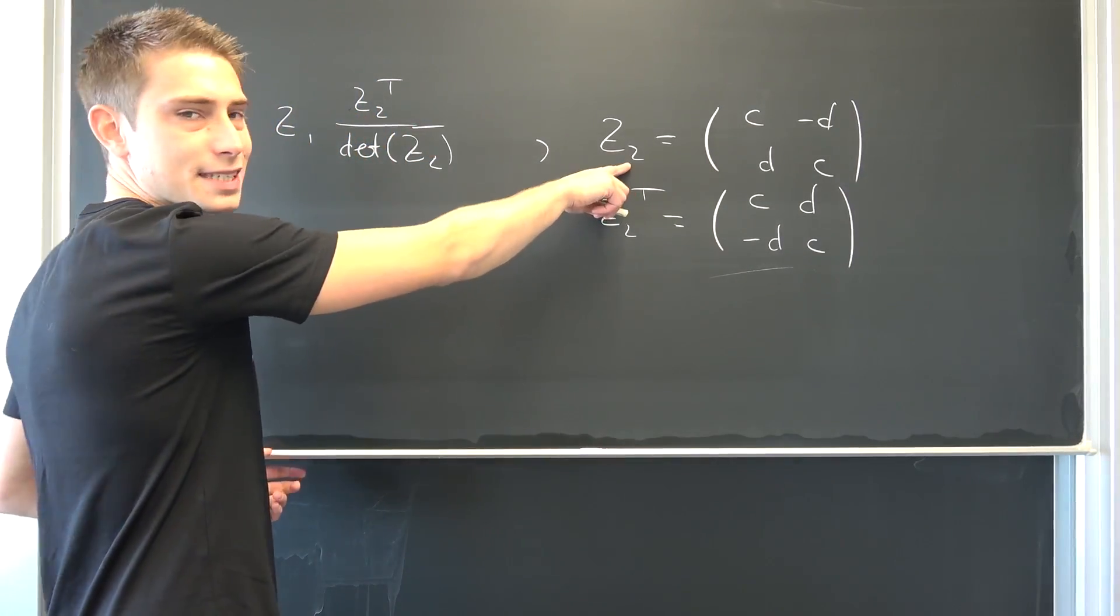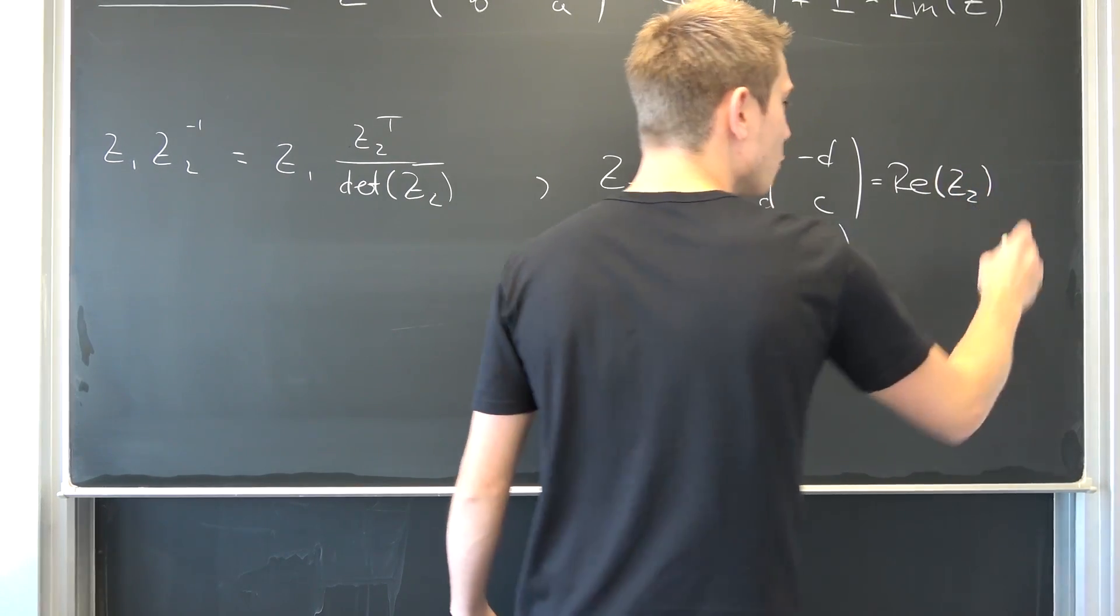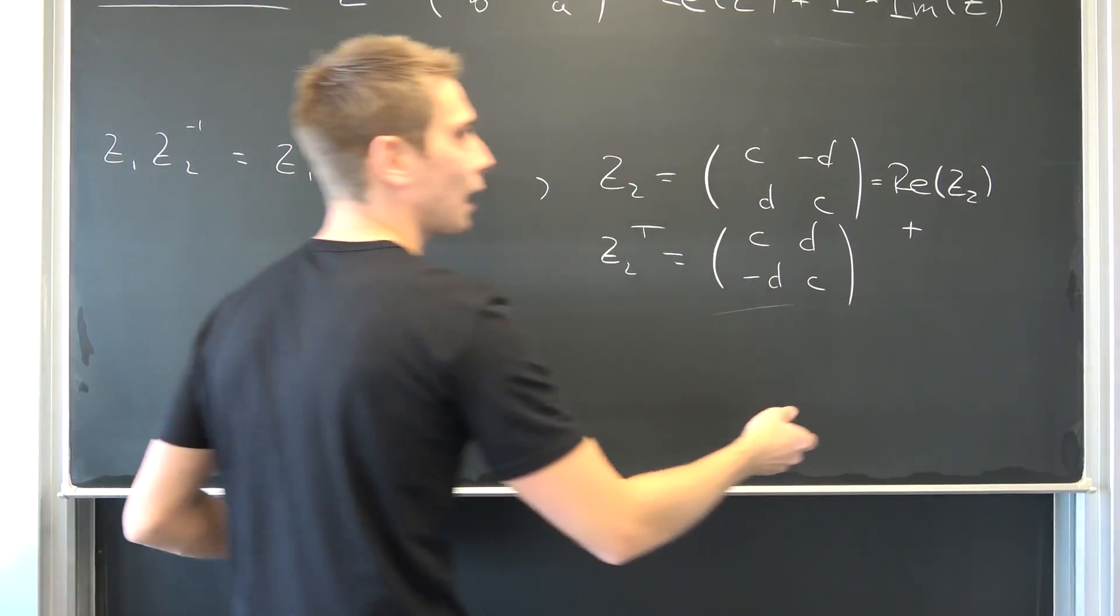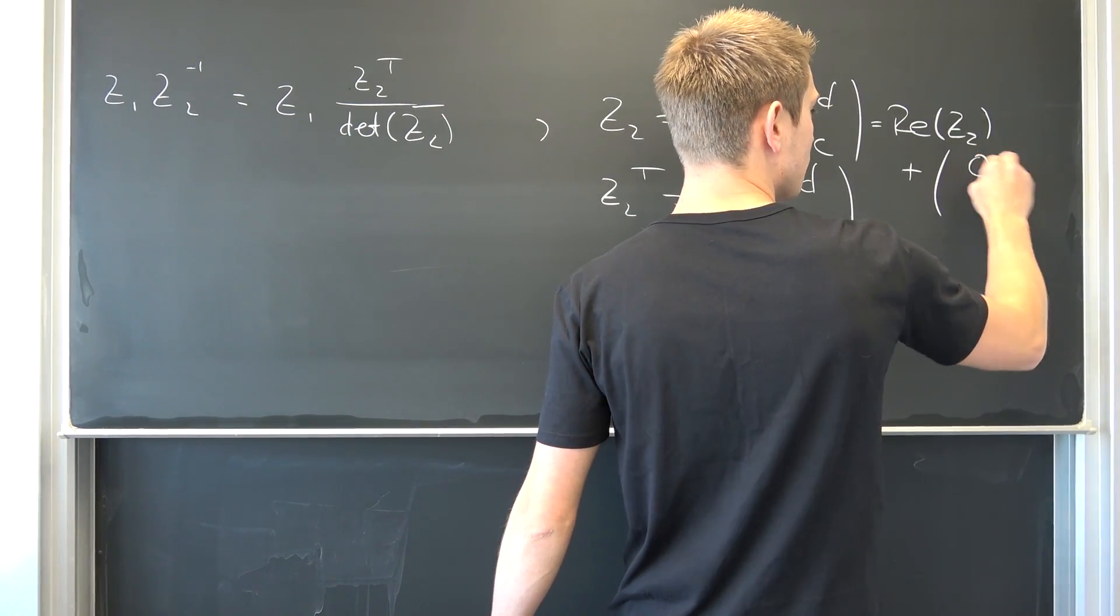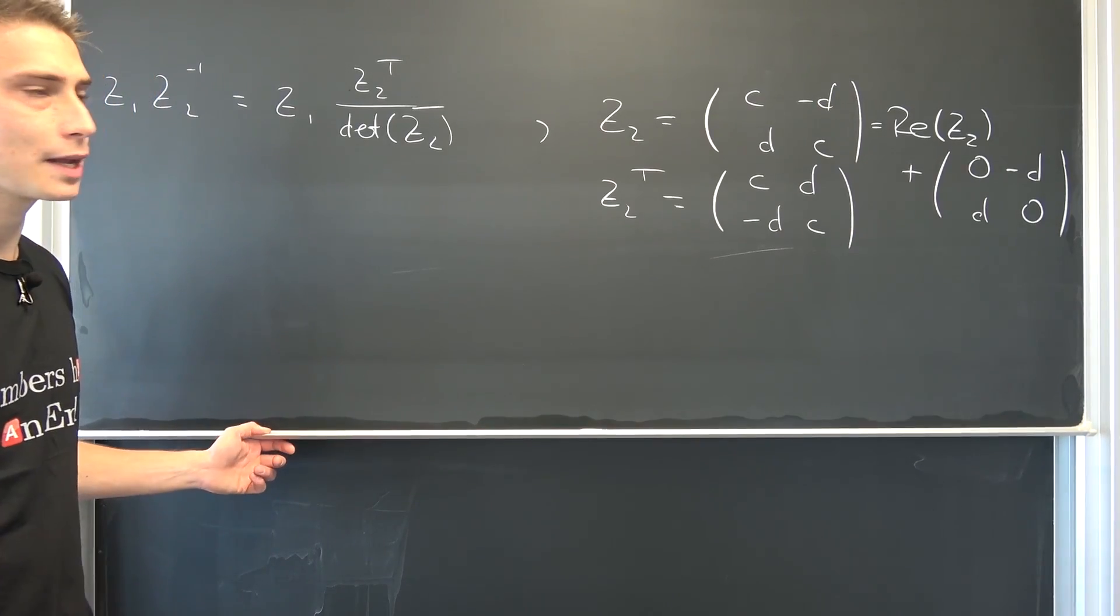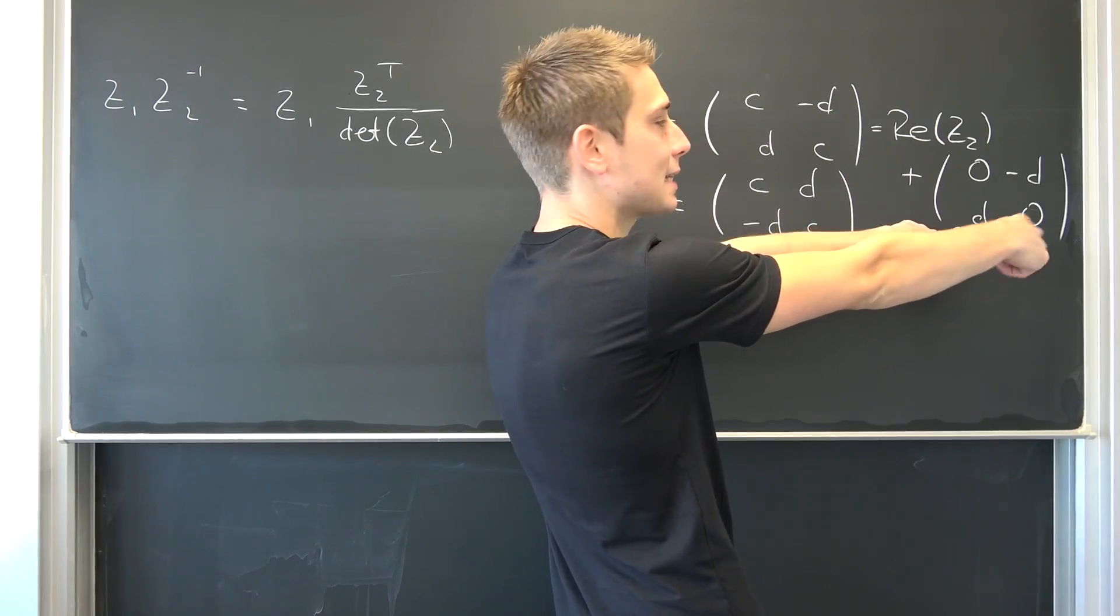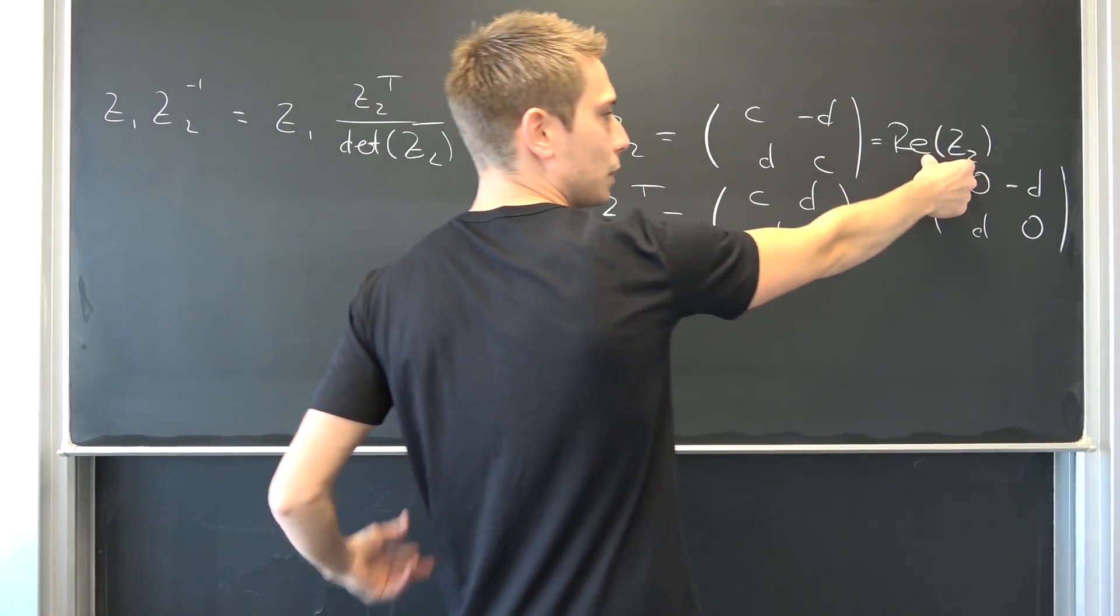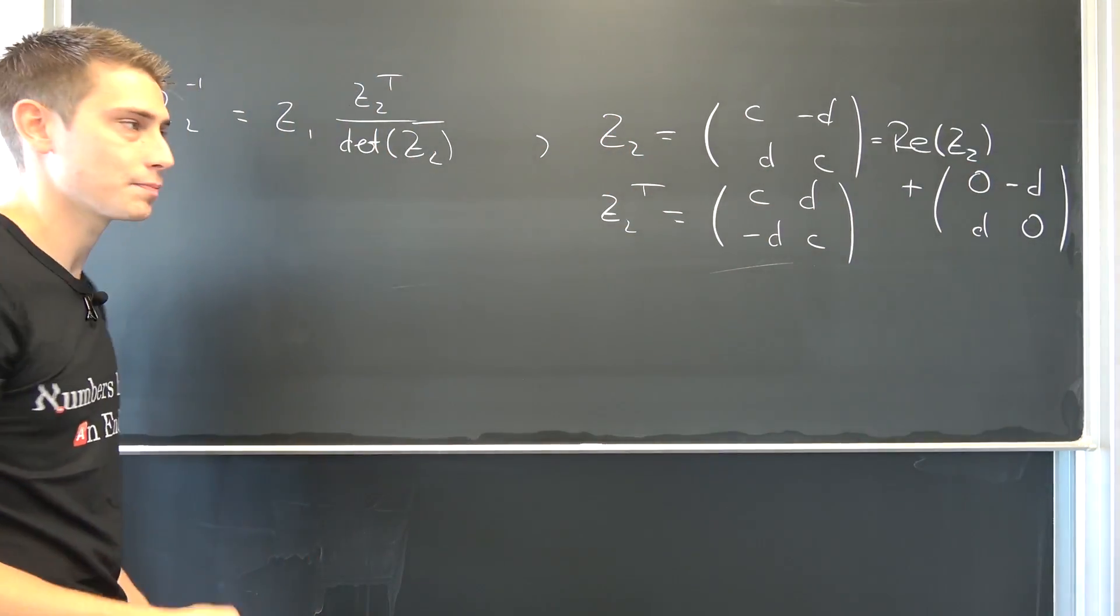If you were to write out z2 you are going to end up with the real part of z2 plus i times the imaginary part of z2 in this case which is nothing other than 0 negative d, d and 0. This is what we had right here. And now you might see that if we were to multiply this matrix by a scalar of negative 1, and then add the real part of z2 which is going to be preserved together with this new imaginary part, we are going to end up with exactly the transpose.